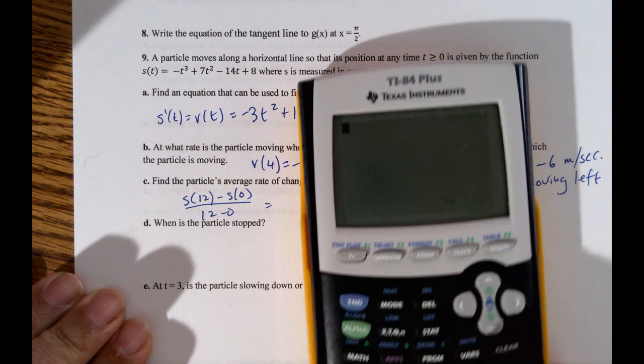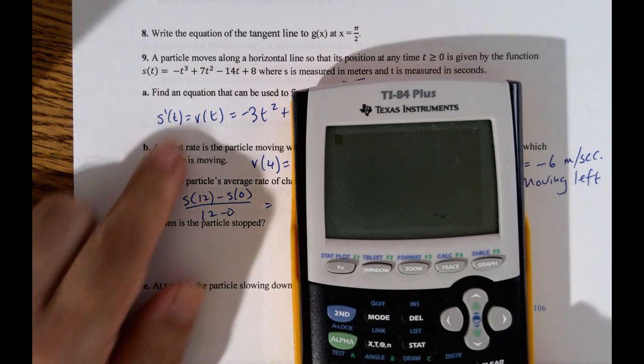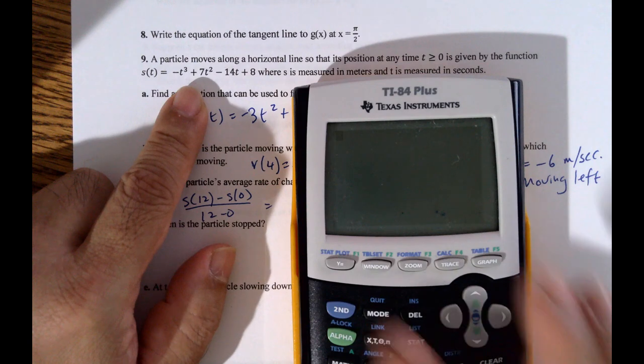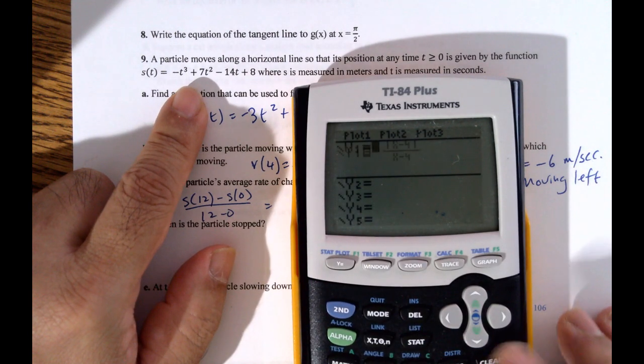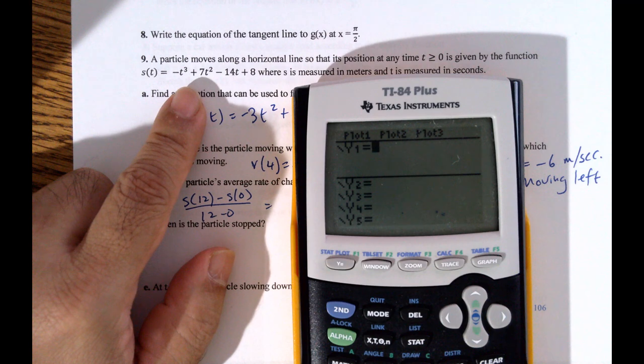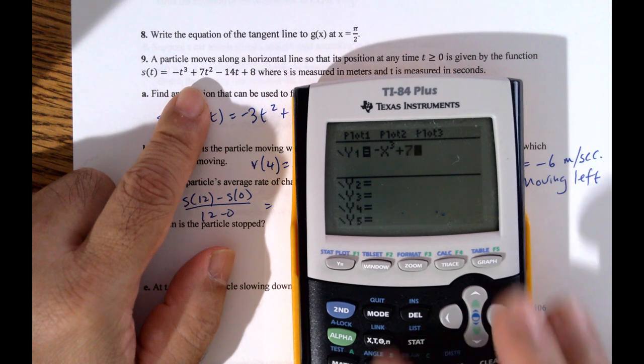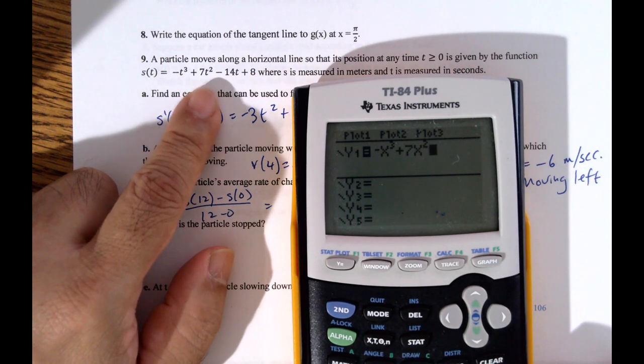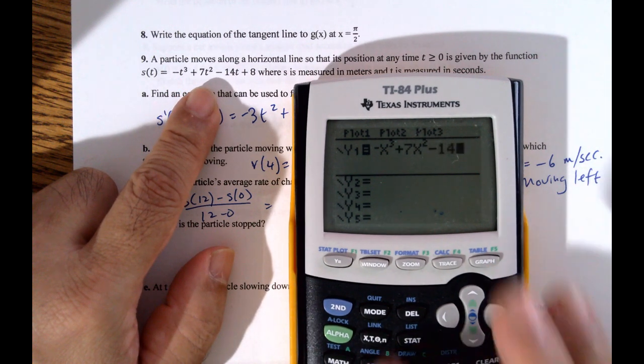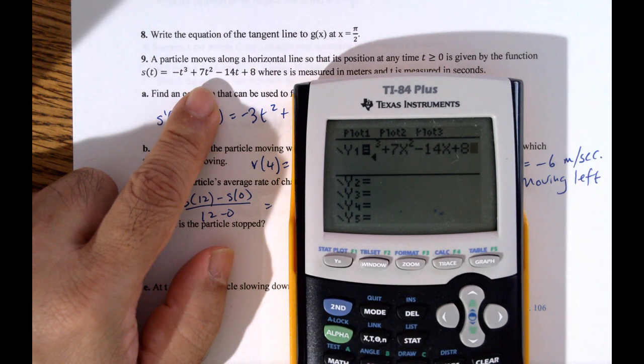Okay, so s of t. So this is a reminder of how to use the calculator. So it's negative x cubed plus 7t squared minus 14t using x here on the calculator.